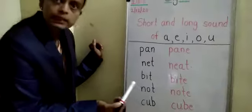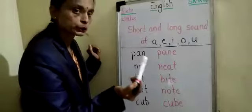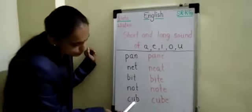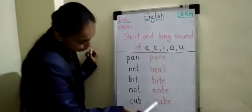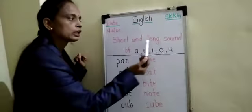N, O, T, NOT. N, O, T, E, NOTE. C, U, B, CUB. C, U, B, E, CUBE. CUBE is a long sound of U.